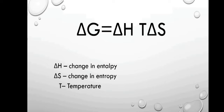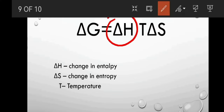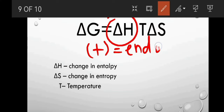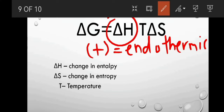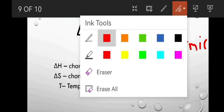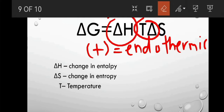Now, if only one of the two is favorable, we have to do some math. If delta H is positive, or endothermic, the energetic unfavorability could be outweighed by the other term if the process is entropically favorable. And since temperature T is a factor here, this factor will increase with a larger T. So entropically favorable processes are more likely to be spontaneous at a higher temperature.